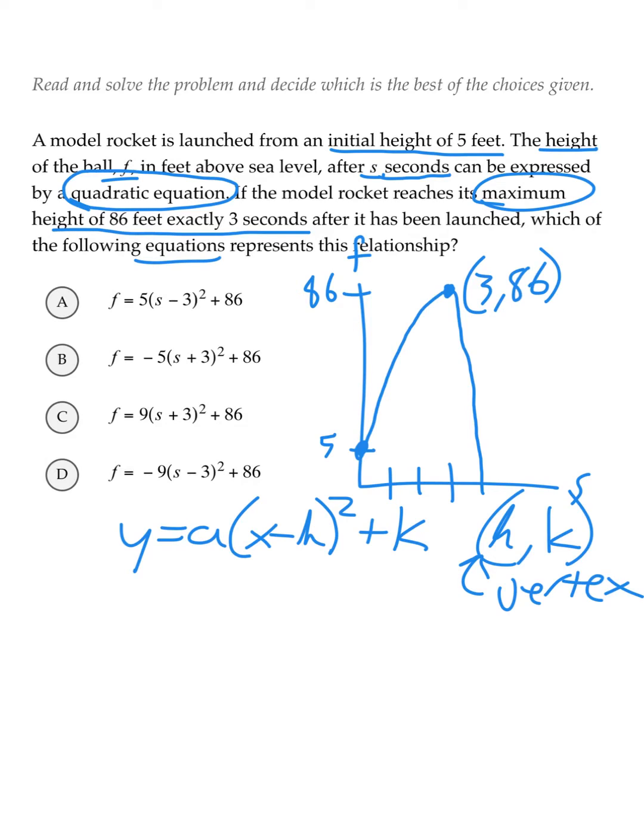Since we have the vertex for this parabola, and axes of f and s, our equation should look something like this: f equals a(s minus 3) squared plus 86. Incorporating the 3 and the 86 from our vertex, we should get an equation like that.